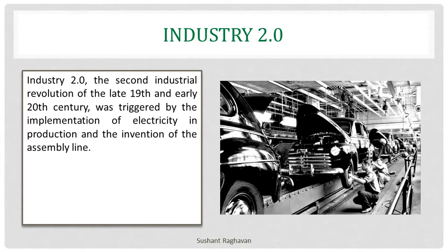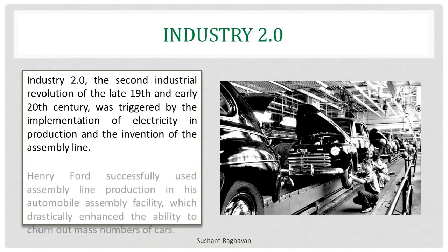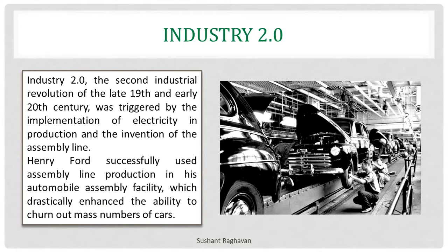Industry 2.0, the second industrial revolution of the late 19th and early 20th century, was triggered by the implementation of electricity in production and the invention of the assembly line. Henry Ford successfully used assembly line production in his automobile assembly facility, which drastically enhanced the ability to churn out mass numbers of cars.